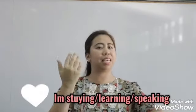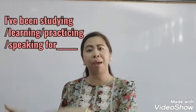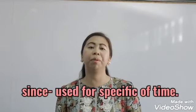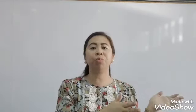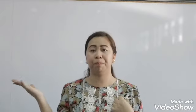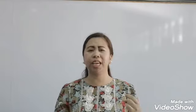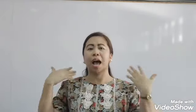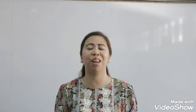The eighth phrase is 'How long have you been studying English?' You can say: I've been studying English for a period of time, I've been studying English since I was in college, or I've been studying English since I was in elementary or primary school. Note the difference between 'for' and 'since': 'for' is used with an amount of time, while 'since' is used for a specific point in time — for example, 'I've been speaking English since I was in college.'